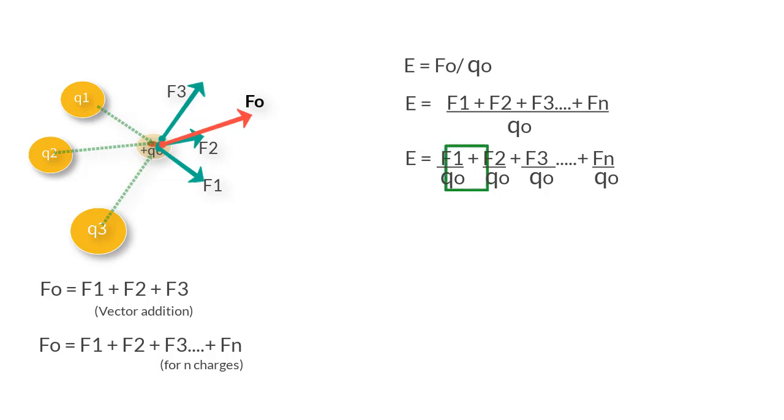But each of these quantities is the electric field due to each charge. So we can write the equation as E equals E1 plus E2 plus E3 and so on till we reach En. So we can find the value of E at this point in two ways: find the net force due to all charges and divide by Q0, or find E due to each charge and then add them vectorially. When we attempt numerical problems later, depending on the available information, we will use either method.